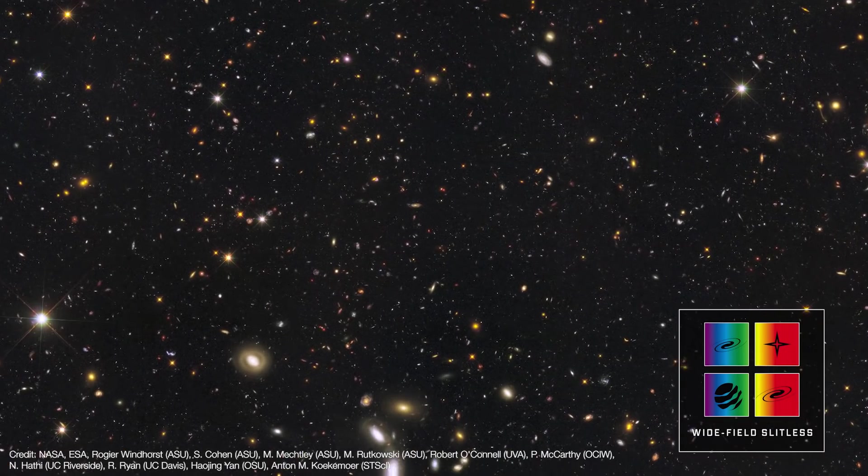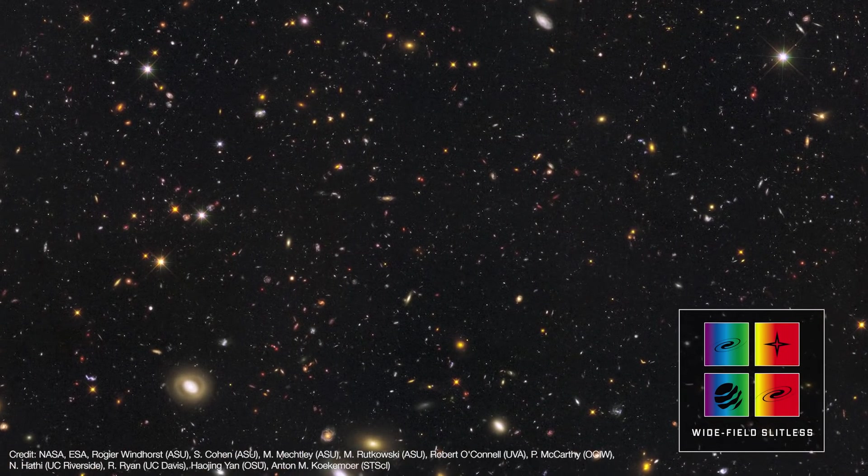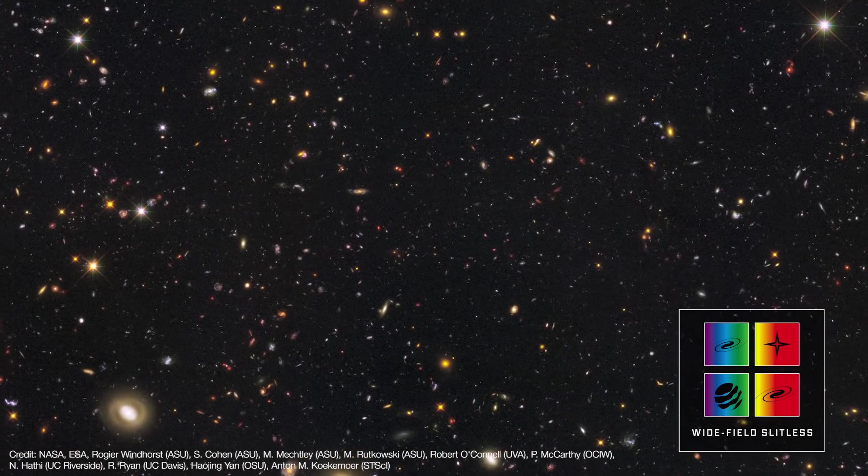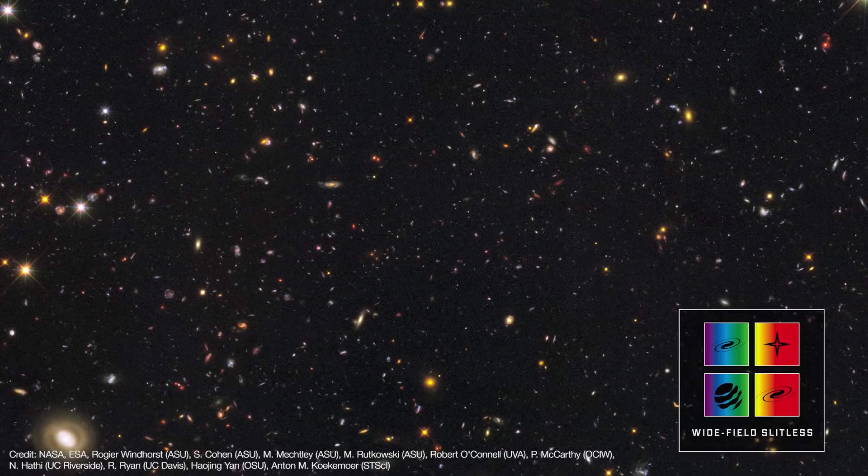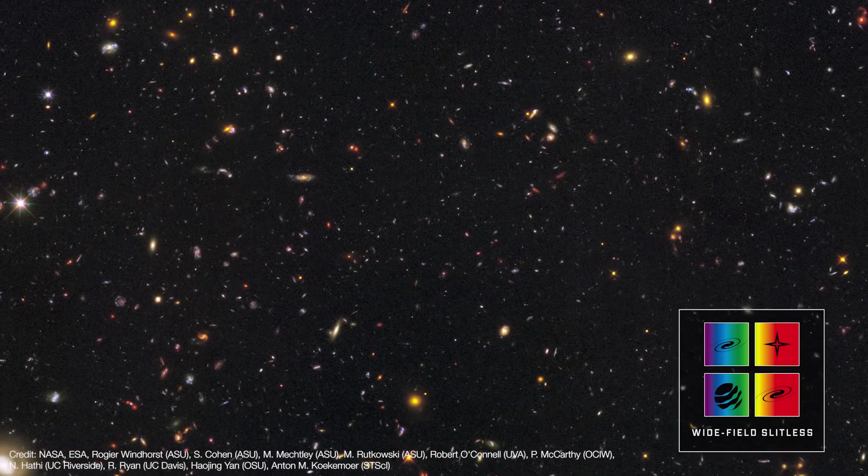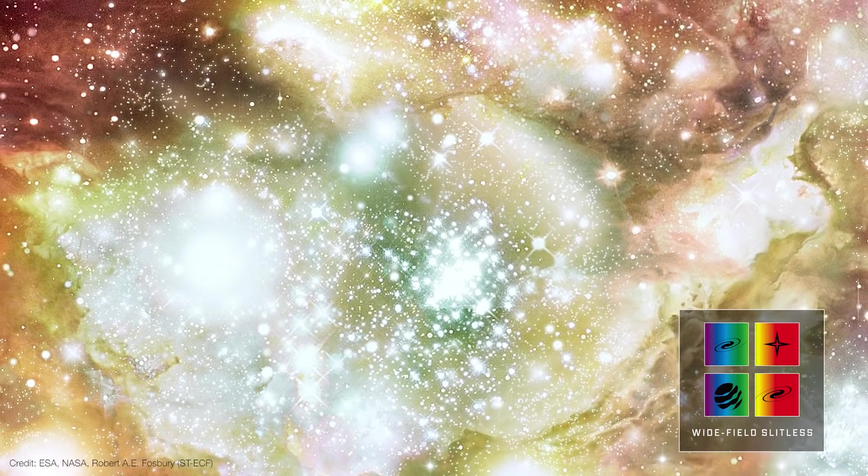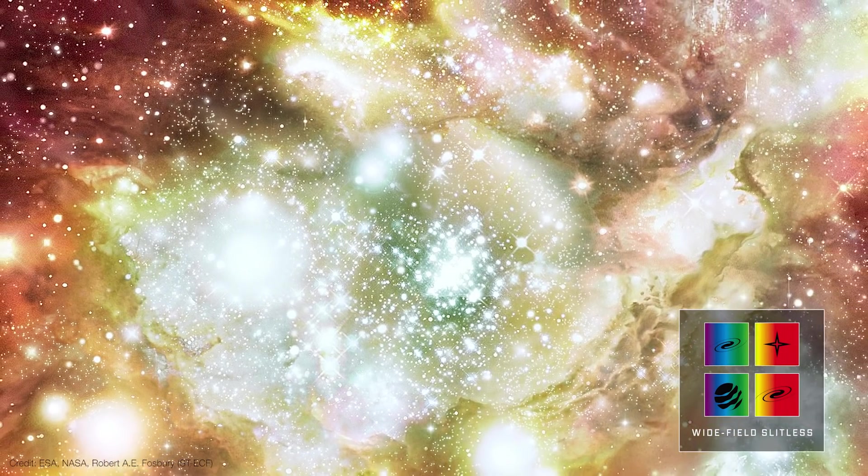In its wide field spectroscopy mode, NIRISS is optimized for studying several high redshift galaxies at once. And this allows NIRISS to study starbirth in the very first galaxies to form in the universe.